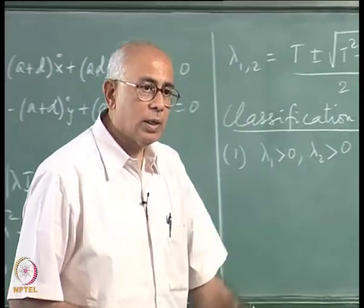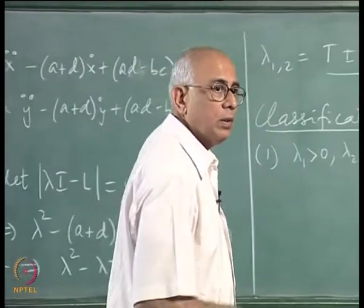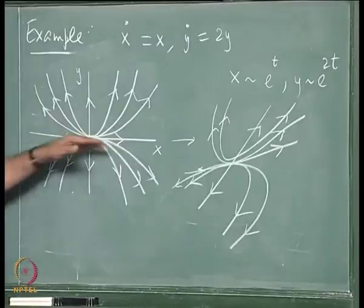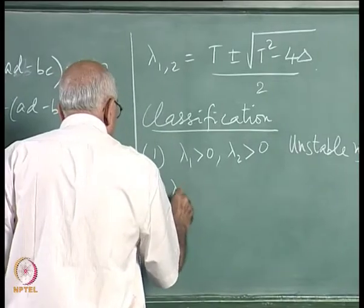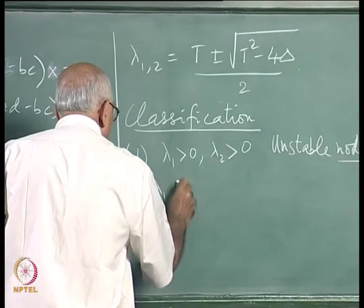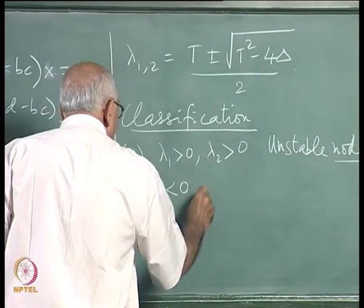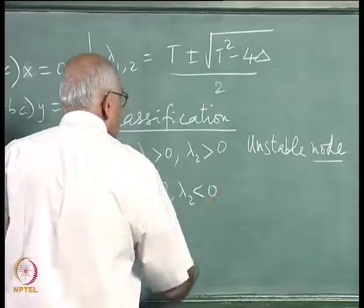We will come back to explain what sorts of flows have this common tangent in specific examples. What would happen if both eigenvalues were negative — λ₁ < 0 and λ₂ < 0?